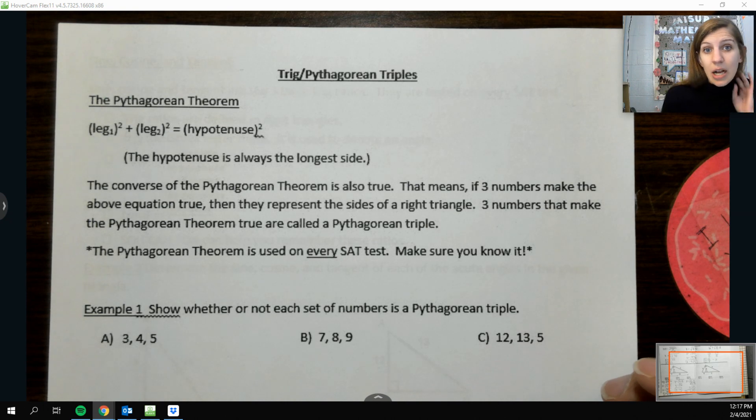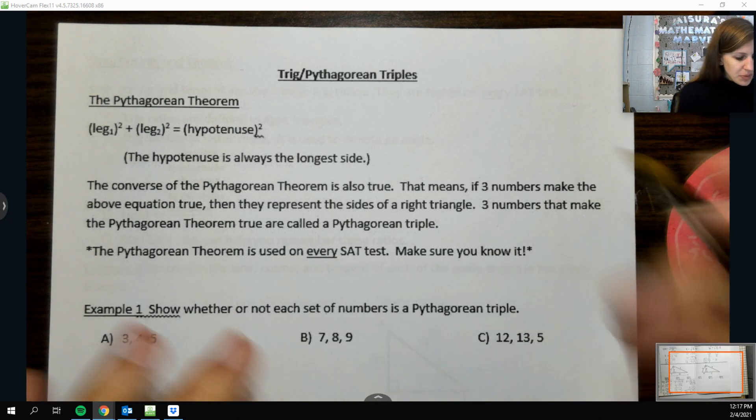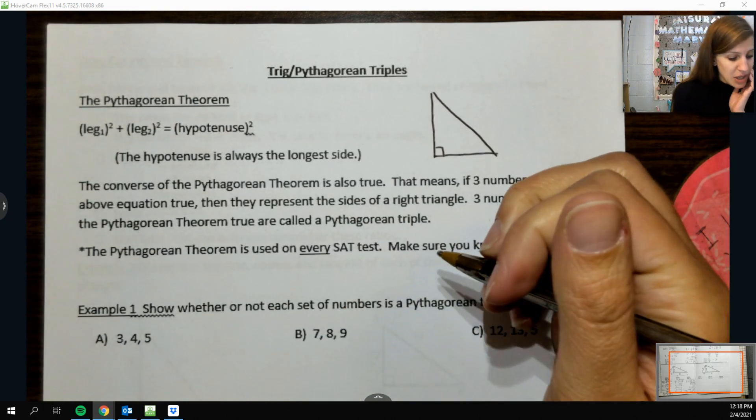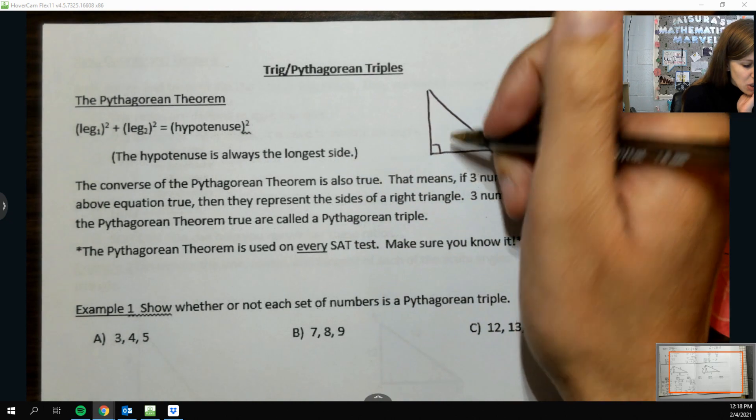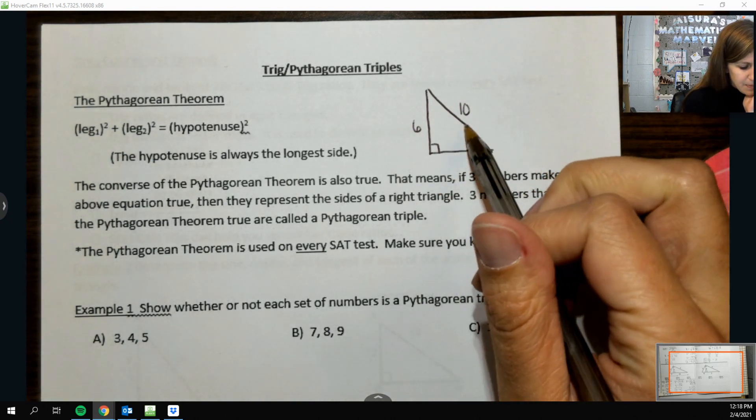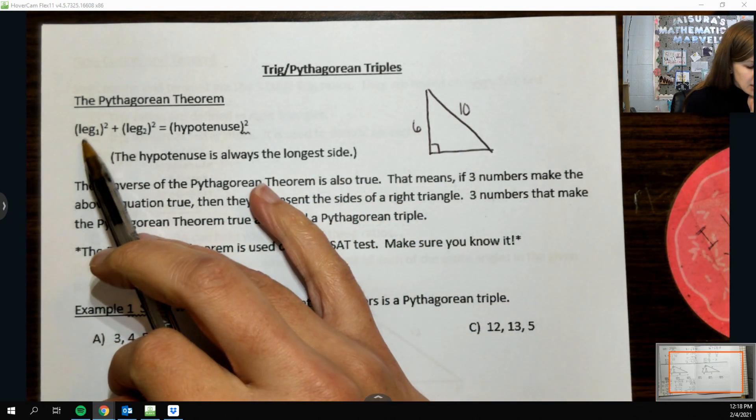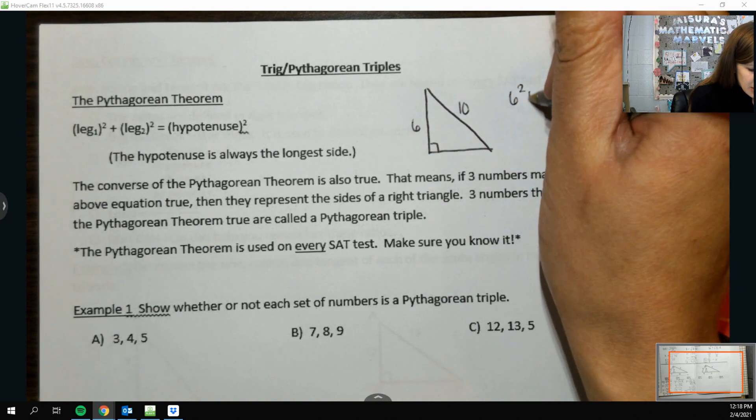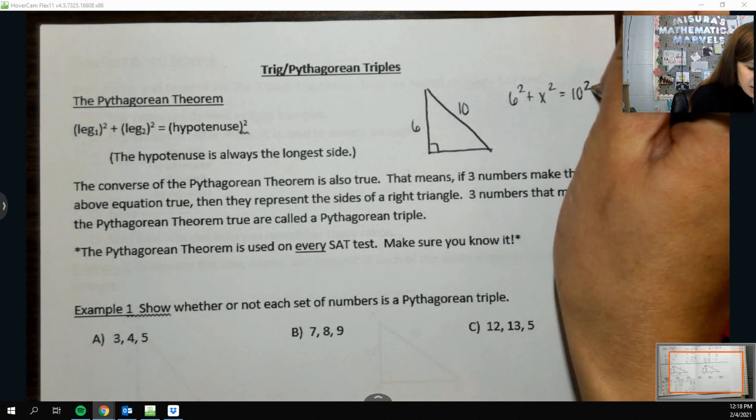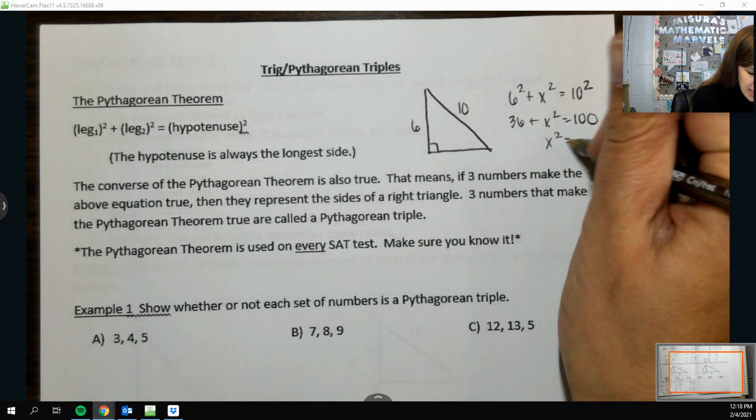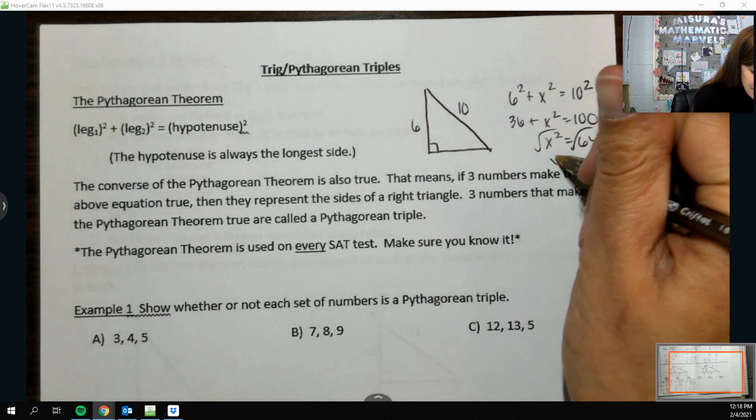So the most basic thing we can talk about when it comes to right triangle trig is the Pythagorean theorem, which allows us to find the third side length of a right triangle as long as I know two. So like if I knew that this side here was six and this side here is 10, you would have 6 squared plus x squared equals 10 squared. So 36 plus x squared equals 100. Subtract the 36 for 64 and square root it. So x is 8.